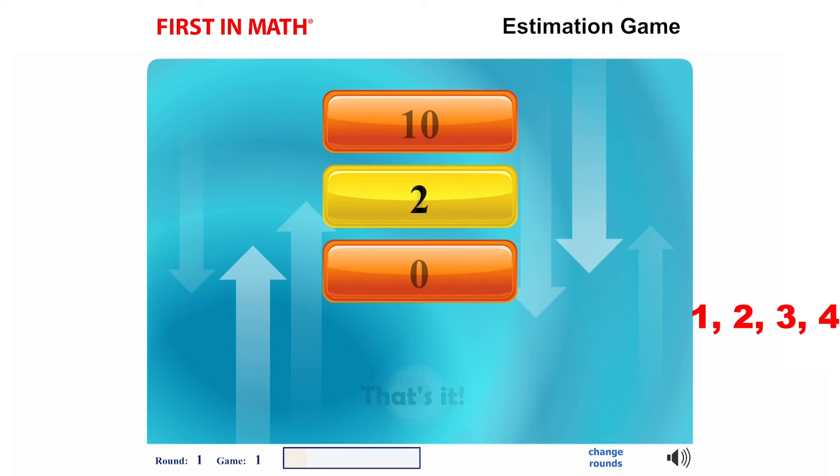Remember that numbers one, two, three, and four round down to zero. Numbers five, six, seven, eight, and nine round up to ten.